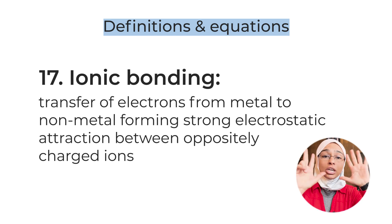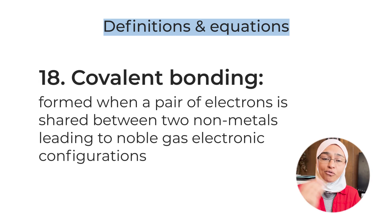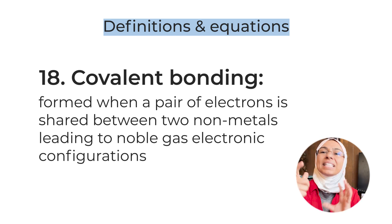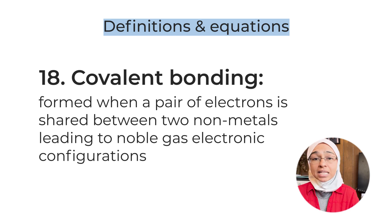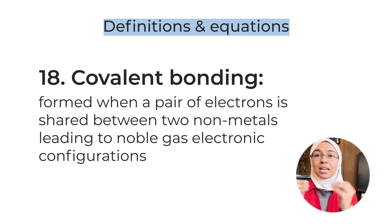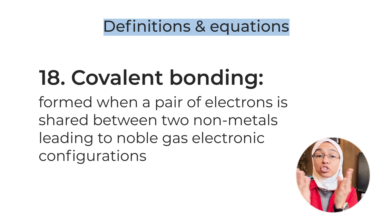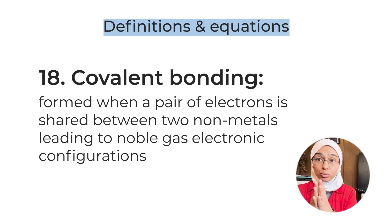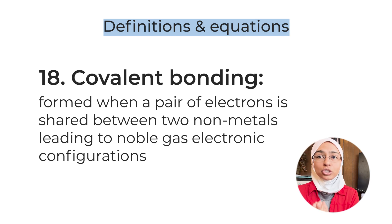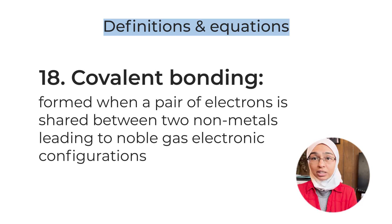Definition number eighteen: covalent bonding — the sharing of electrons. Covalent bonds are formed when a pair of electrons is shared between two non-metals, leading to a noble gas electronic configuration. Examiners like testing students on the difference between ionic and covalent bonding — ionic involves transfer, covalent involves sharing, and covalent bonding occurs between non-metals only.